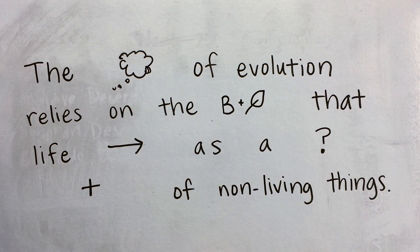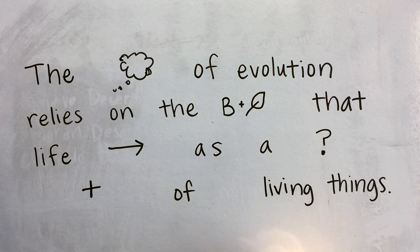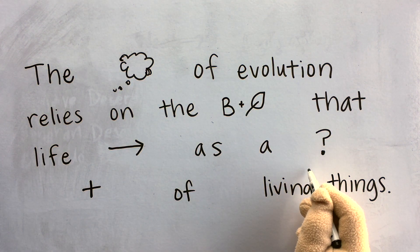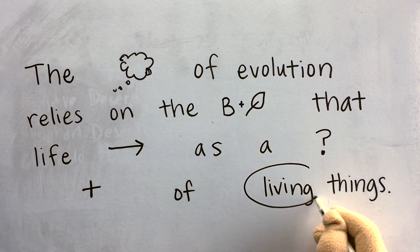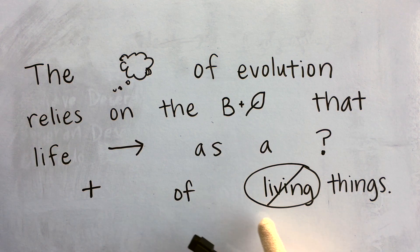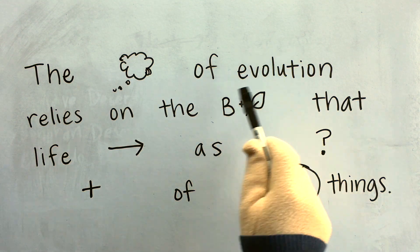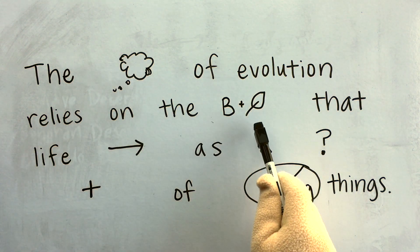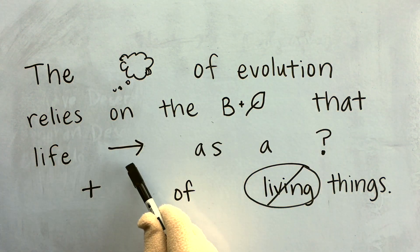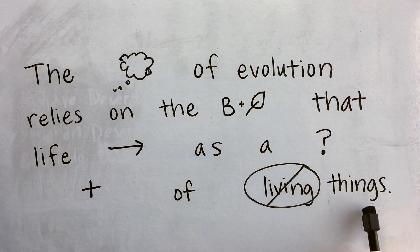Now I have one more. Let's erase 'non.' Sometimes non, or not, is represented with a circle and a line through it. So this will represent non-living. Let's read this together: The theory of evolution relies on the belief that life began as a chance combination of non-living things.